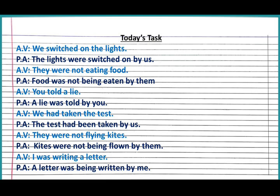Next: 'You told a lie.' This sentence is again from past indefinite tense. The object is 'a lie.' First of all we will write this object at the beginning of the sentence. Since 'a lie' is singular, we use 'was.' The answer is: 'A lie was told by you.'